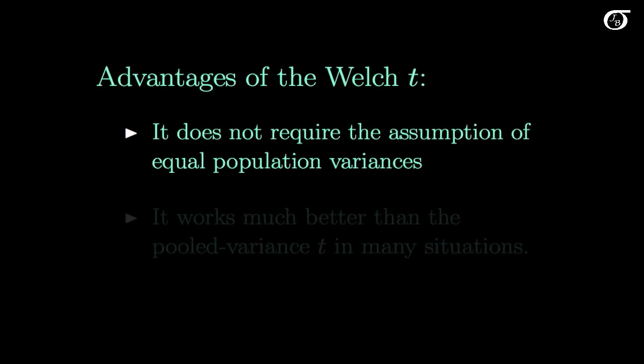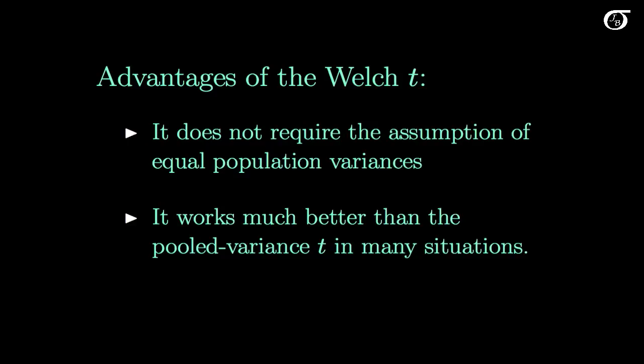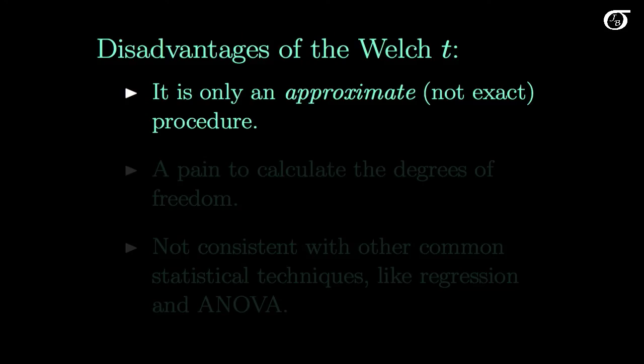The Welch procedure does not require the assumption of equal population variances, so we don't have that added restriction. It also works much better than the pooled variance t-procedure in many situations — if our population variances are actually different, the Welch t-procedure will quite often work quite a bit better. The disadvantage is that it's only an approximate procedure, not an exact one, though it works pretty well in a lot of cases, so that's not too much of a disadvantage.